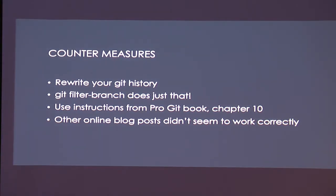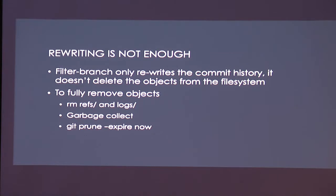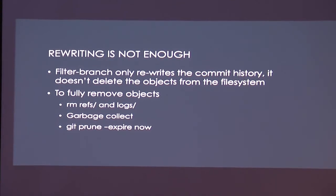Countermeasures: you can rewrite your history. The git filter-branch tool does that for you. I would advise using the Pro Git book, Chapter 10, because blog posts I found online weren't that helpful. The caveat is that when you rewrite your history, all you're doing is rewriting the pointers — you still have to remove all your references and garbage-collect and everything.